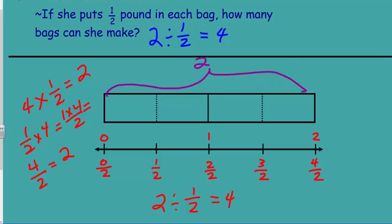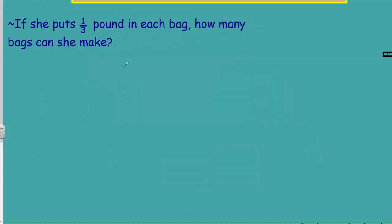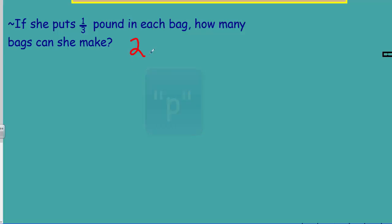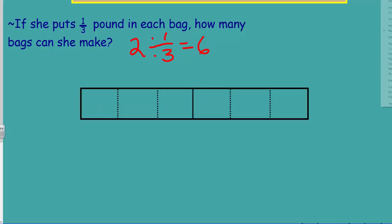Now: if she puts one third of a pound in each bag, how many bags can she make? Following our pattern, the dividend is two, and we're dividing by one third — the size of our group is one third. So we have two divided by one third. There are three thirds in one whole, so we would end up with six bags.